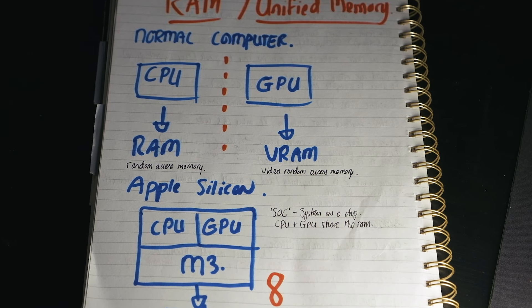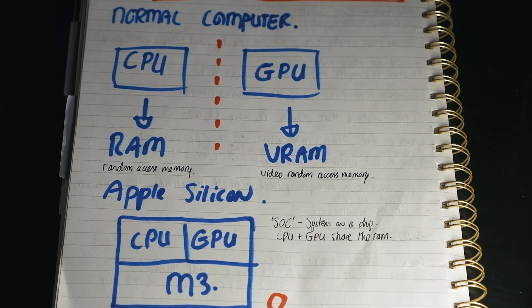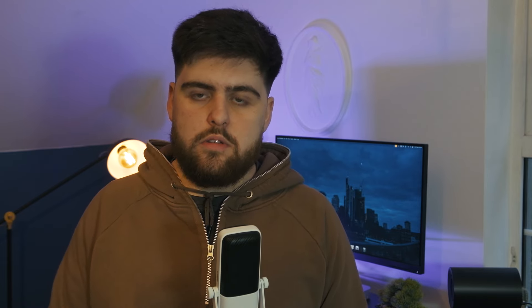First we have to understand what RAM is and what unified memory is. Apple and a lot of tech YouTubers throw around specs and acronyms and make it extremely confusing for anyone that just needs a new laptop. On a normal computer you have your CPU — the central processing unit, or the brain — and you have the GPU, the graphical processing unit, or the eyes. Think of the CPU as doing all the Excel work and documents, and the GPU helping you play games or render videos. They are both separate things and they both have their own versions of RAM, which is an acronym for random access memory.